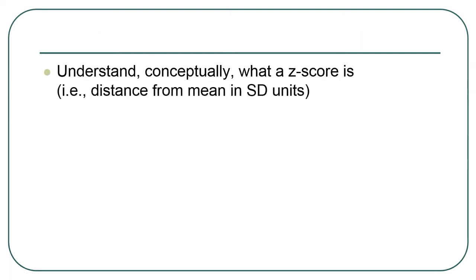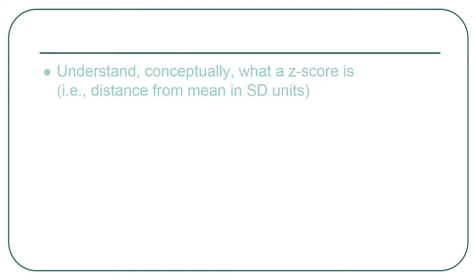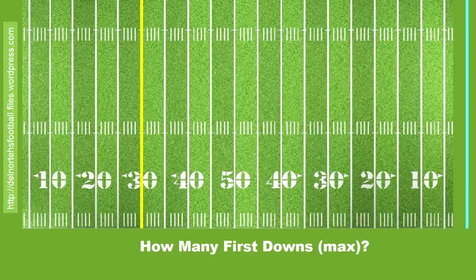Moving on, this is your main learning objective here: understanding what a z-score is. Z-scores are a little dry because generally we want them as a stepping stone to understanding stuff about normal distributions. I'll try to make some examples where they seem relevant, but ultimately this is not why we want z-scores. We want them because they're useful in a longer-term sense.